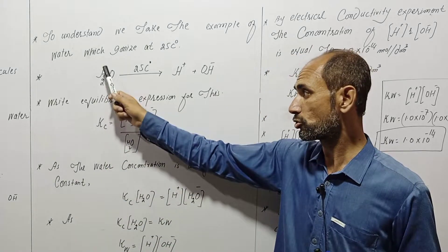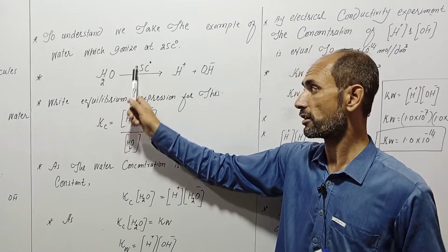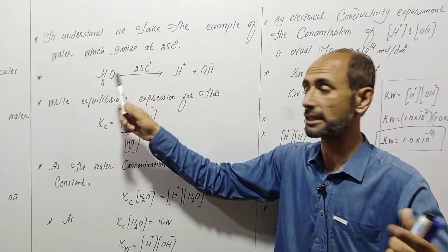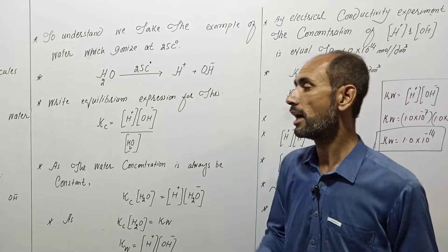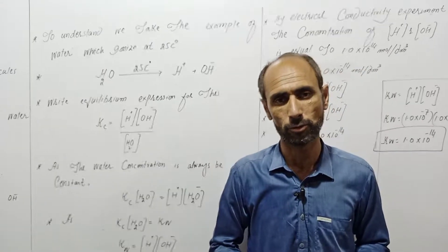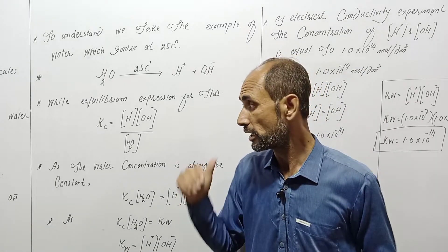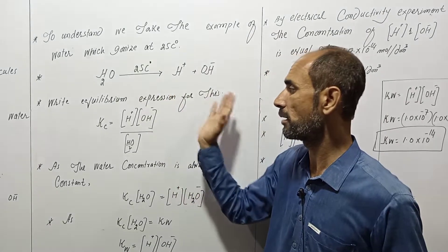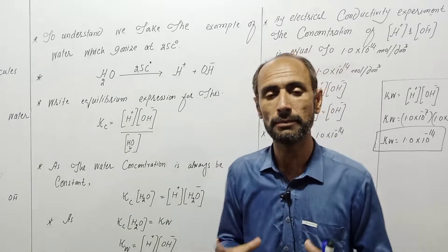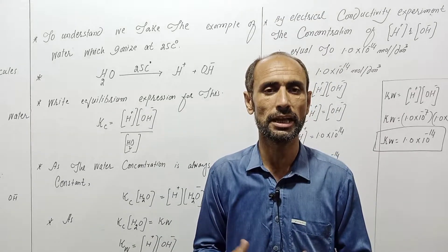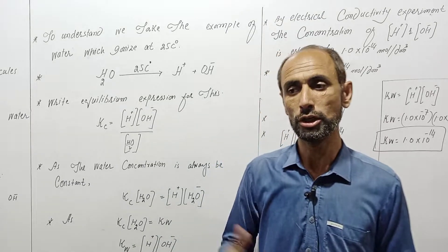For example, at 25 degrees centigrade, H2O produces a hydrogen ion H+ and a hydroxyl ion OH-.